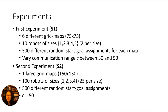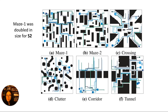In both experiments, we generated 500 random start-goal assignments for each map and had various different sizes of robot. This slide shows the maps used for S1; for S2, we took the maze 1 environment and doubled it in size.